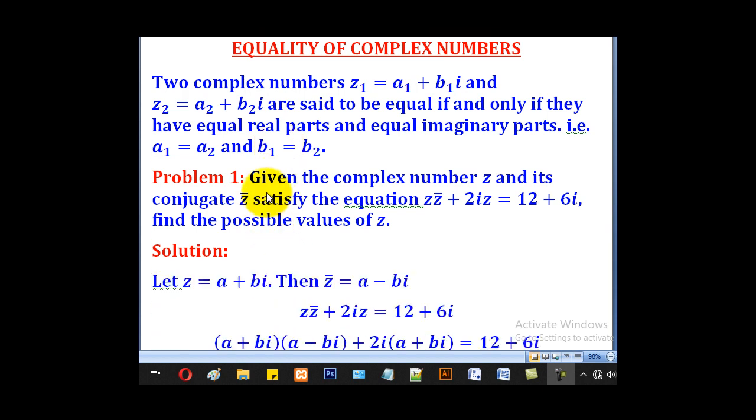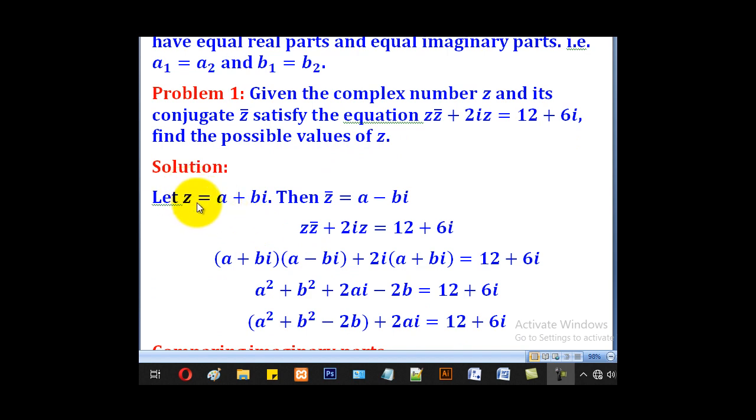That's the concept of equality we shall use to solve this problem. Given the complex number Z and its conjugate Z bar satisfy the equation Z times Z bar plus 2iZ equals 12 plus 6i, find the possible values of Z. So in this case, we shall first let Z to be equal to A plus Bi and Z bar will be A minus Bi.